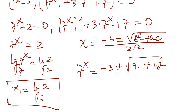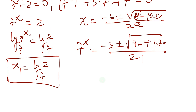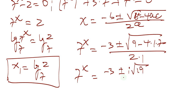Divided by 2 times 1. So 7 to the x equals negative 3 plus or minus — and this gives us 9 minus 28, which is square root of negative 19, which is i times square root of 19 — divided by 2.